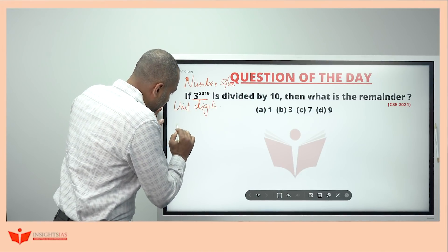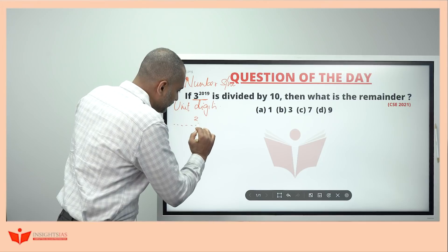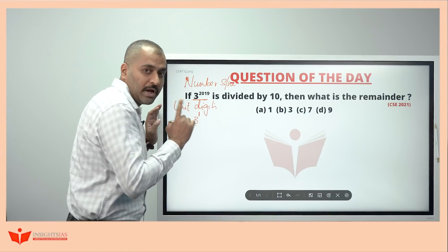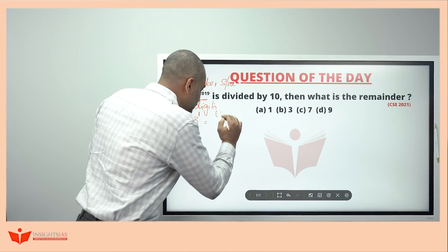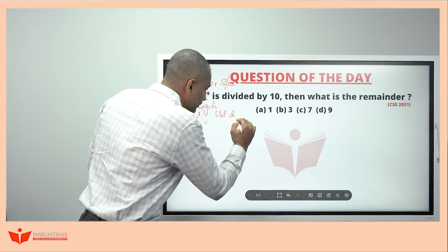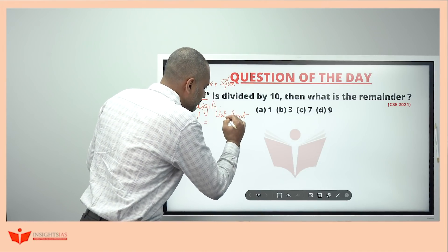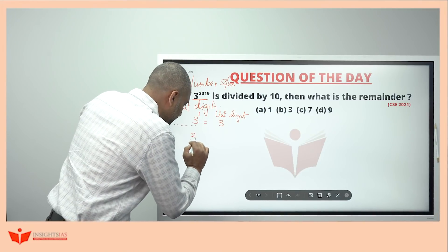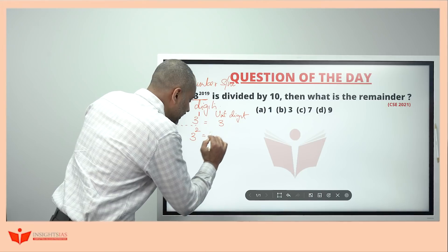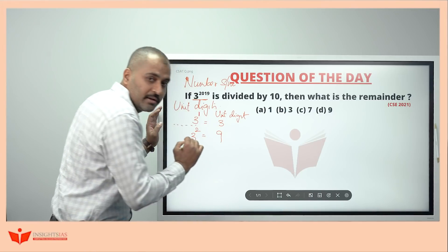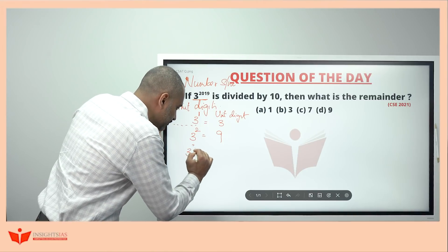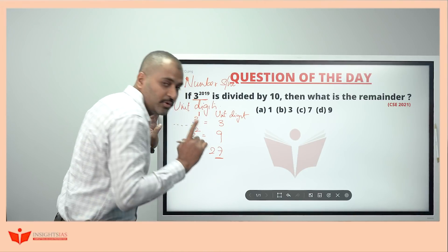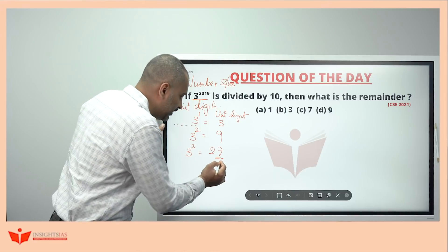See, any number which ends with 3, that is unit digit is 3. If you put a power of 1, the unit digit of that whole number will be 3 only. If it is 3 to the power of 2, then the unit digit will be 9. If it is 3 cube or 3 power 3, it is 27, but we are concerned only about the unit digits here. Unit digit is 7.